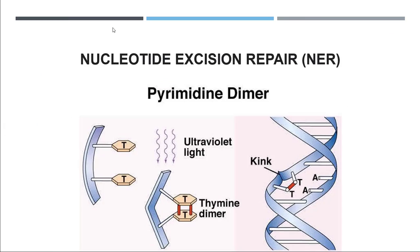Last but not least, the process called nucleotide excision repair. In this picture you can see ultraviolet light attacking the DNA strand. Once it attacks, the pyrimidines — in this case two thymines present side by side — form covalent bonds between each other, creating what are called thymine dimers. Once that occurs, we will have kinks in the double helix structure, disrupting it.